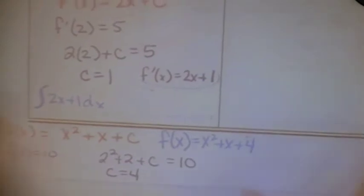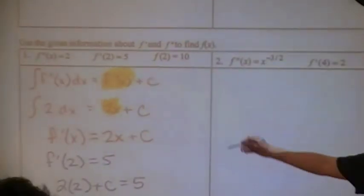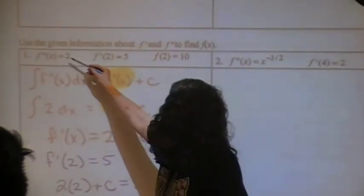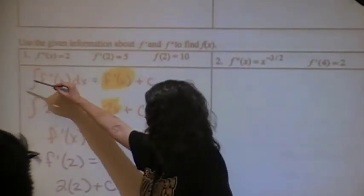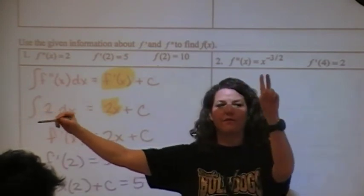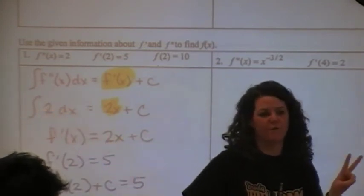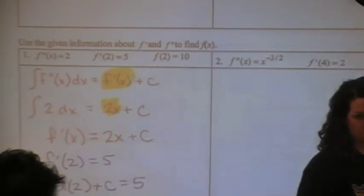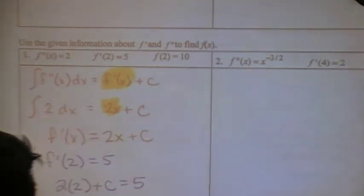We used our original second derivative. We used the anti-derivative and found the first derivative. Then we used the anti-derivative again and found the original function.